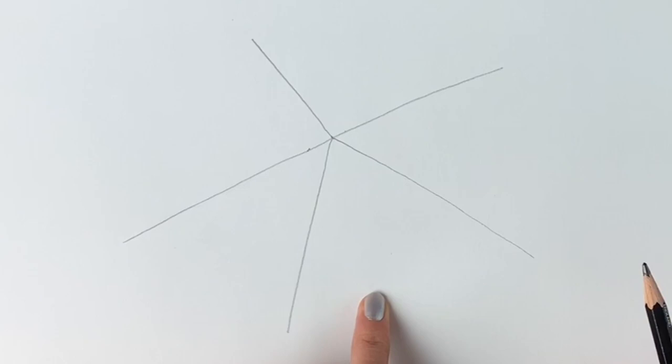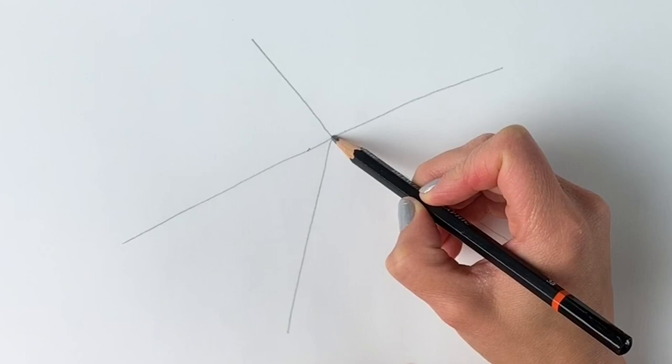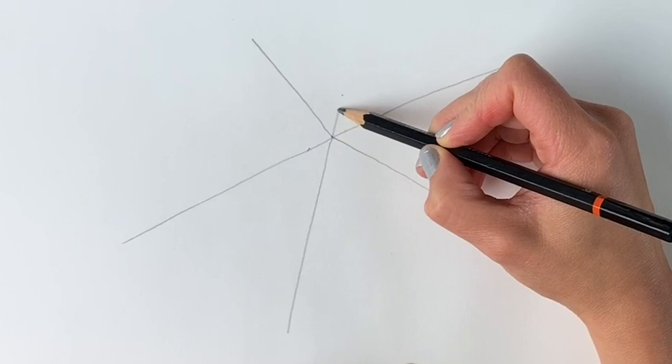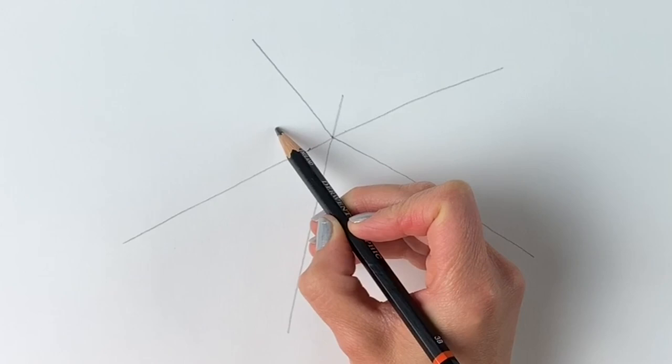Now we're going to be drawing some smaller lines. So from the center up to here we're going to be drawing a little line. One little line like that. From the center up to here we're going to be drawing another one. So using your pencil just go up like this.